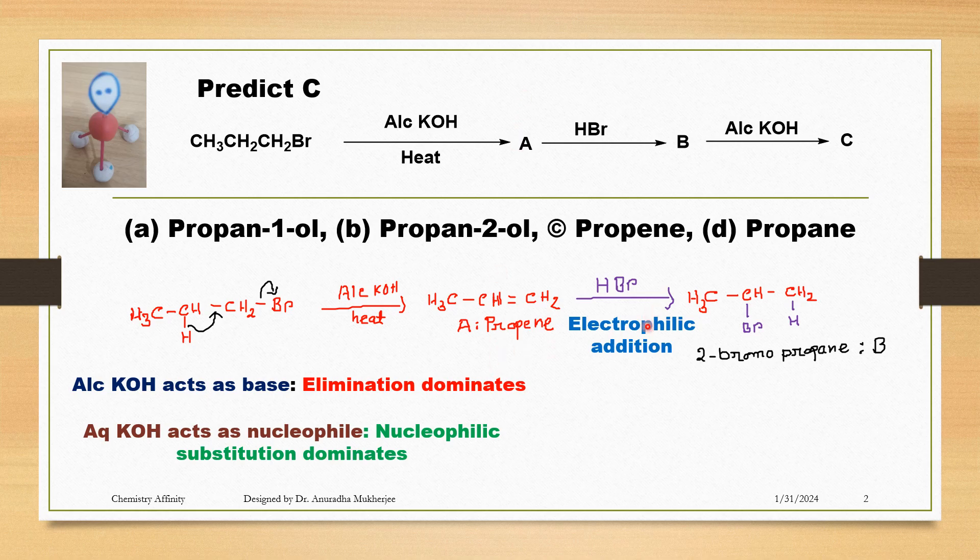Now we are adding HBr, it is an electrophilic addition mechanism. Br minus attacks the more substituted carbon and H plus attacks the less substituted carbon. We are getting 2-bromopropane, this is compound B.